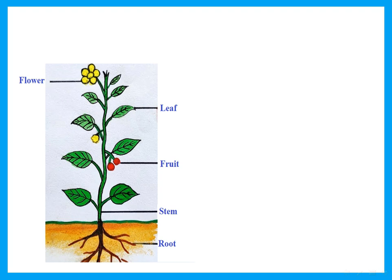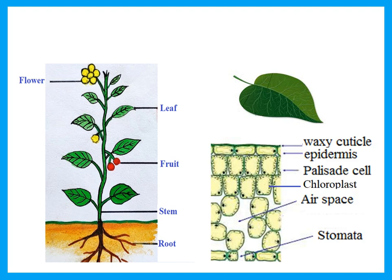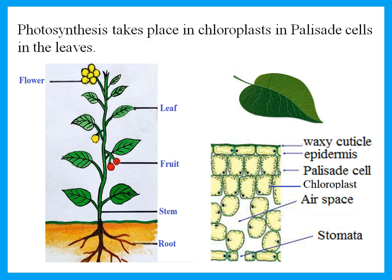If we look at a plant, where does photosynthesis happen? Photosynthesis happens in the leaf. Where in the leaf does photosynthesis happen? These are the layers of the leaf — we have palisade cells, so photosynthesis will occur in the palisade cells or in the mesophyll cells because they have chloroplasts. So photosynthesis takes place in chloroplasts, in palisade cells, in the leaves.